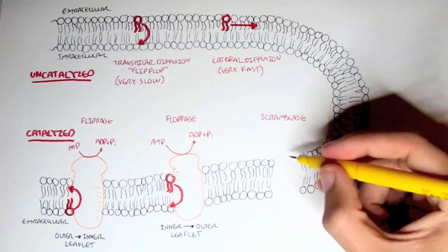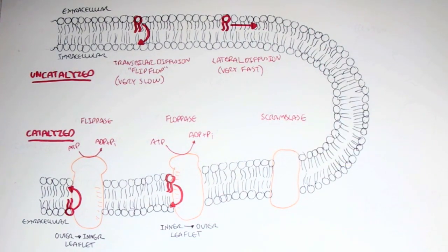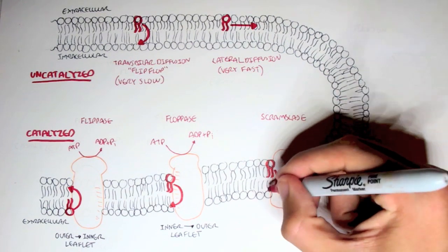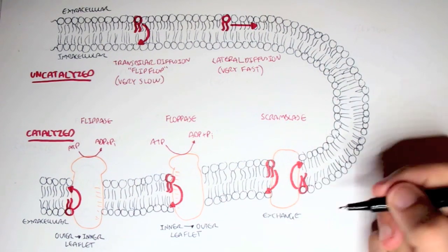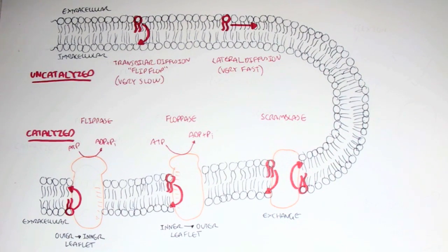The last is called scramblease. And this is a very interesting name. But essentially there's an exchange. A lipid on the inner leaflet moves to the outer leaflet, and at the same time, a lipid on the outer leaflet moves to the inner leaflet.